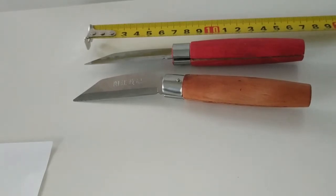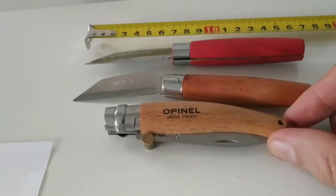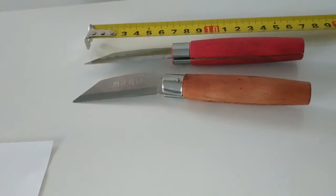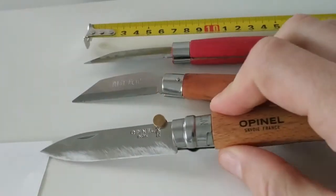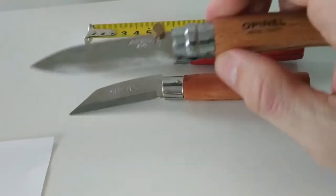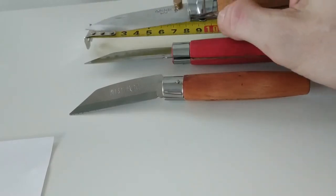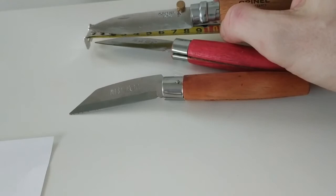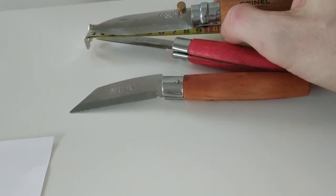So for comparison, this is number eight, the Opinel. Which is a bit bigger. And of course, the blade also is much bigger. This is around six centimeters and this one is around eight and something, yeah, eight something, eight four.